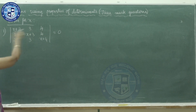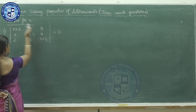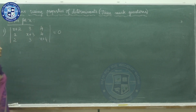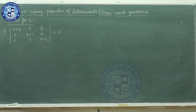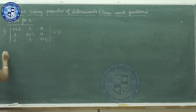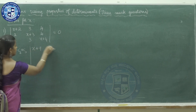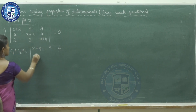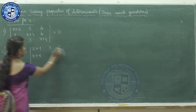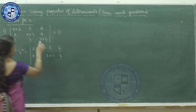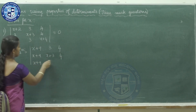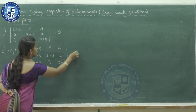Have a look at the determinant. The entries in the rows follow a pattern: x+2, 3, 4; x+2, 3, 4; x+2, 3. Since all the entries in the rows are the same, we use the column operation: column 1 plus column 2 plus column 3. You will get x+2+3+4 = x+9. So the first column becomes x+9 throughout.